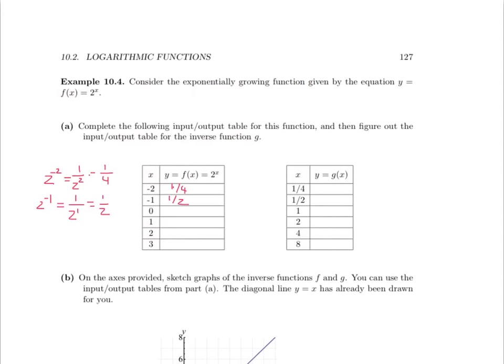Substituting 0 into the function gives 2 to the 0, which is defined to be 1. If we substitute 1, we arrive at 2 to the 1, which is 2. If we substitute 2, we arrive at 2 squared, which is 4. And if we substitute 3, we arrive at 2 cubed, which is 2 times 2 times 2, which is 8.